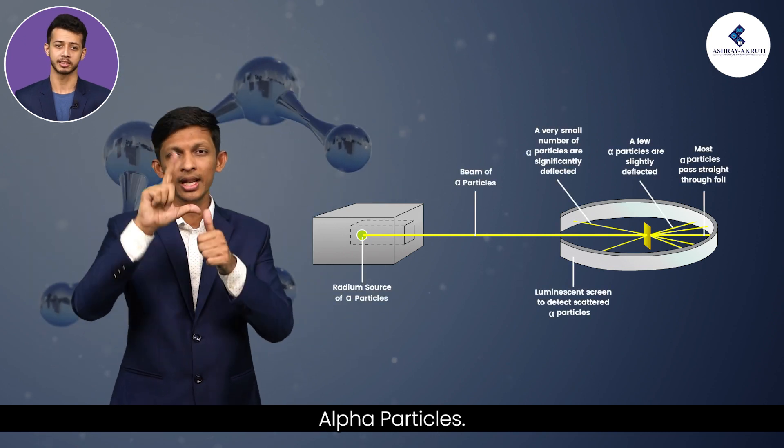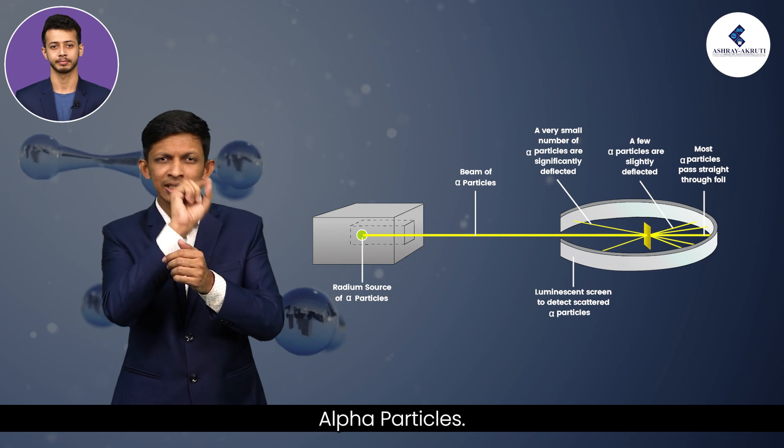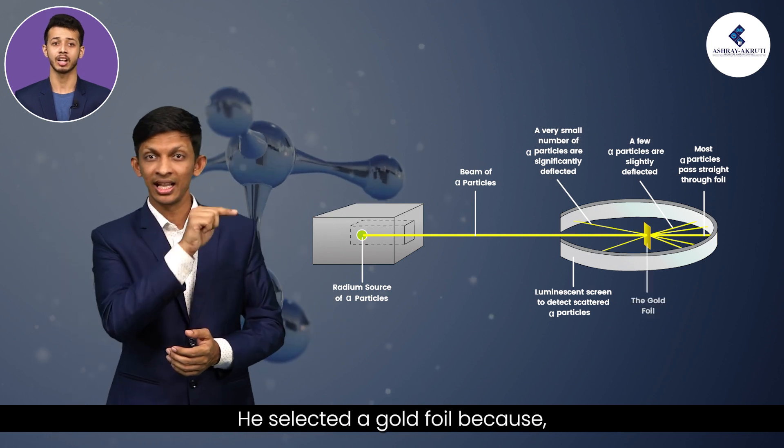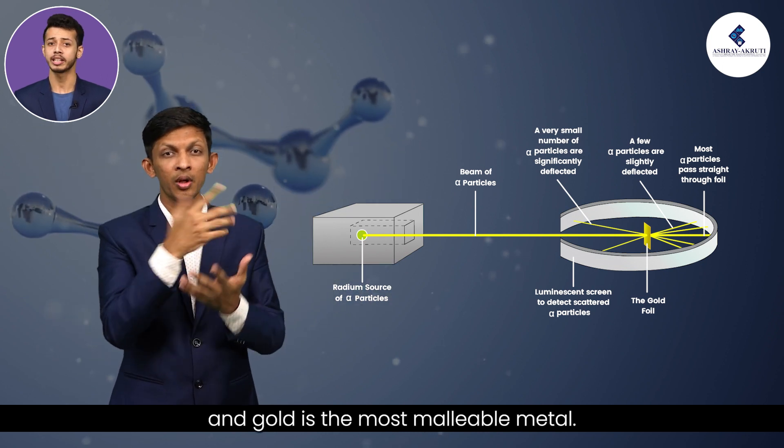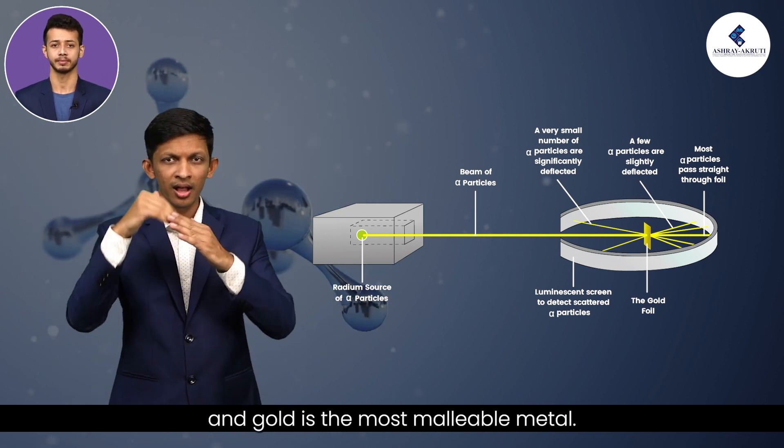He selected a gold foil because he wanted as thin a layer as possible and gold is the most malleable metal.